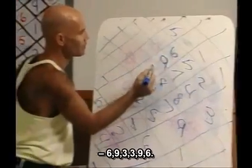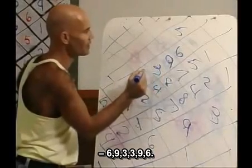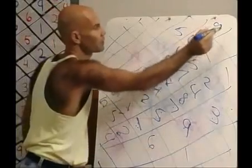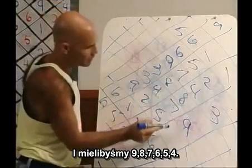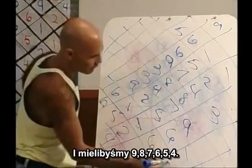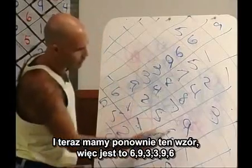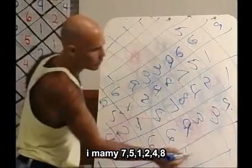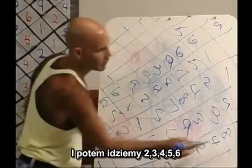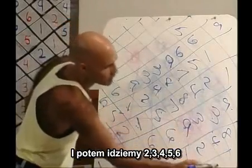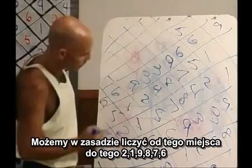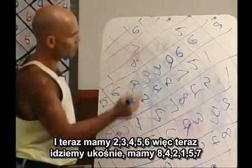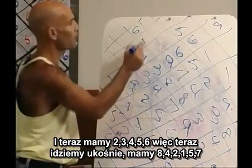So 6, 9, 3 / 3, 9, 6. And we've got 7, 5, 1, 2, 4, 8. And we can go 2, 3, 4, 5, 6 — and actually count all the way over: 2, 1, 9, 8, 7, 6. And we've got 2, 3, 4, 5, 6. So now we can go diagonally — we've got 8, 4, 2, 1, 5, 7.